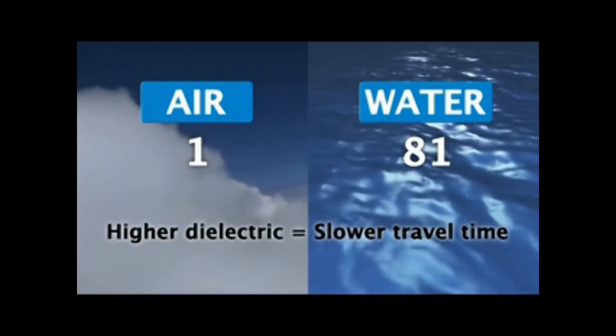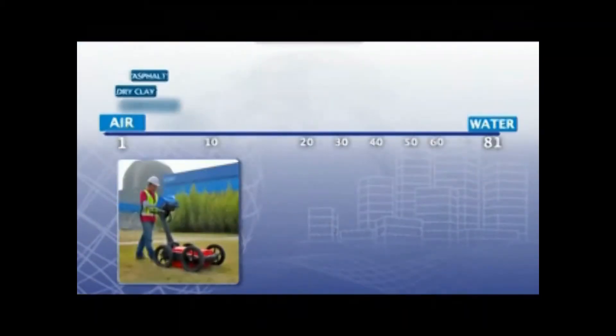Water has a dielectric of 81, which means radar travels slowest in water. Every medium in the world falls somewhere in between.